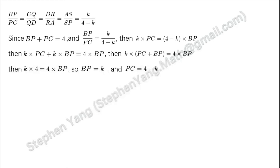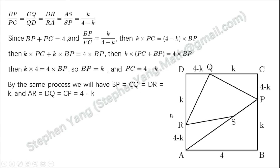We also know that PC equals 4 minus K. If we do the same process as above, we will have BP equals CQ equals DR equals K, and AR equals DQ equals CP equals 4 minus K. Now we can find the area of four triangles and subtract them from the total square area to get the area of the quadrilateral.